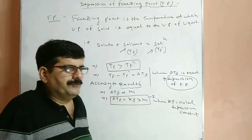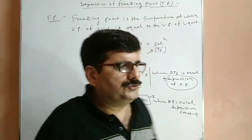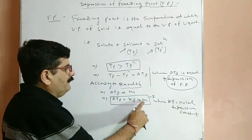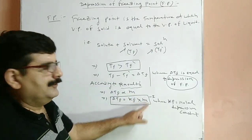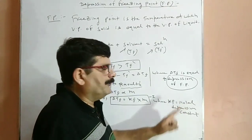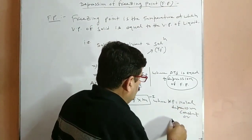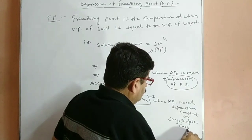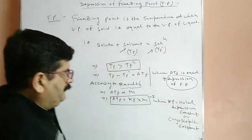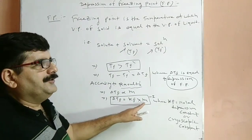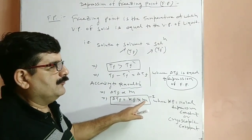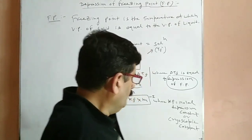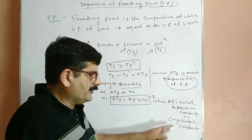According to Raoult's law, delta Tf is directly proportional to molality of solute in solution. So delta Tf = Kf × m. This is equation first, where Kf is called molar depression constant, also known as cryoscopic constant. If molality of the solution becomes equal to unity, then the depression of freezing point is equal to the molar depression constant or cryoscopic constant.